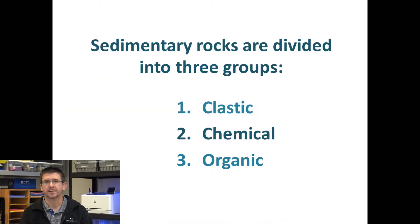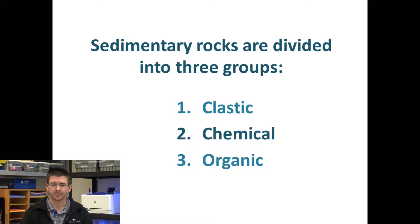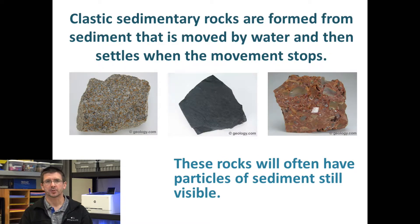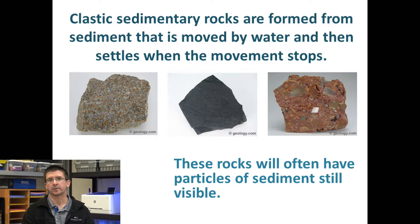When we look at sedimentary rocks, based on how they're formed, we can put them into three different categories: clastic sedimentary rocks, organic sedimentary rocks, and chemical sedimentary rocks. Clastic sedimentary rocks are a group of rocks that are formed from sediment moved by water and then settling down once the water stops flowing.